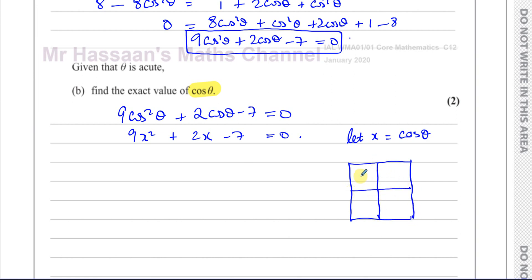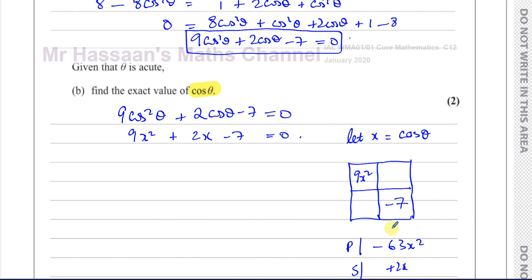In the window method, I place 9x² in the top-left and −7 in the bottom-right. Multiplying these gives −63x². I need two numbers that multiply to −63x² and sum to +2x. The numbers 9 and 7 work, so I use +9x and −7x.